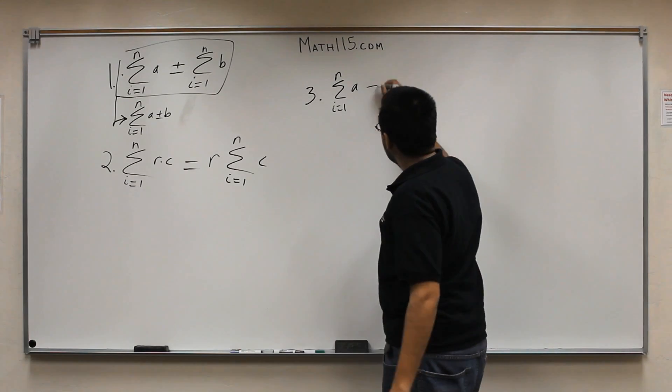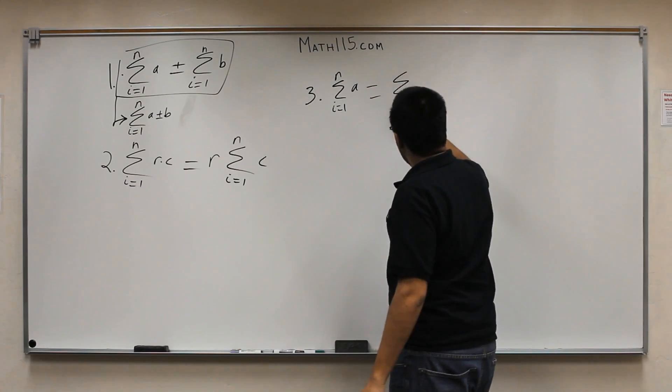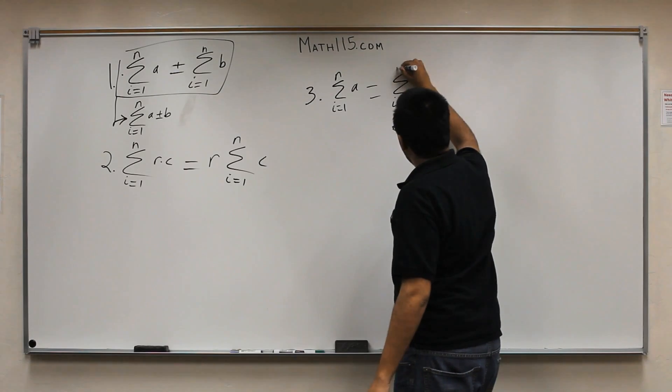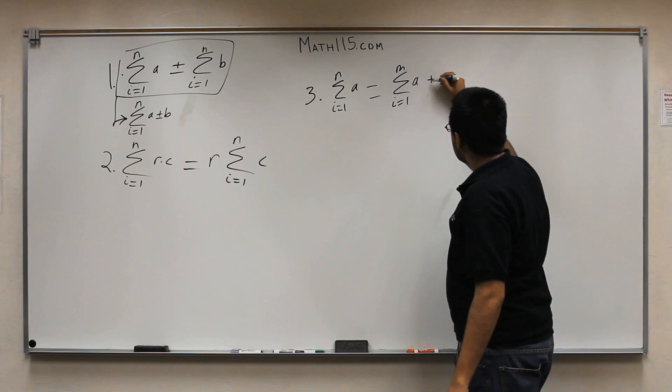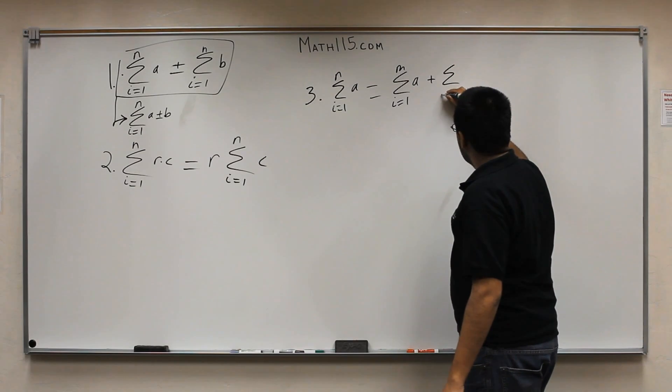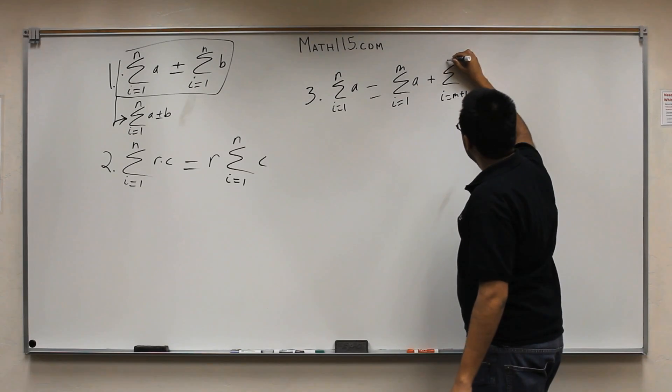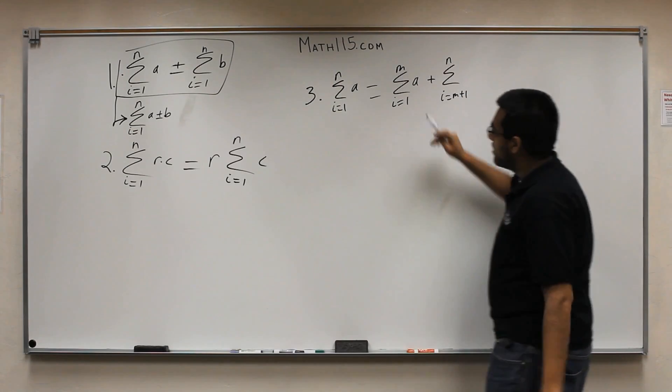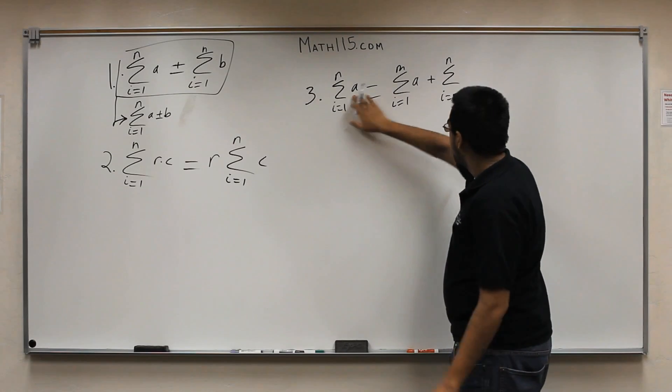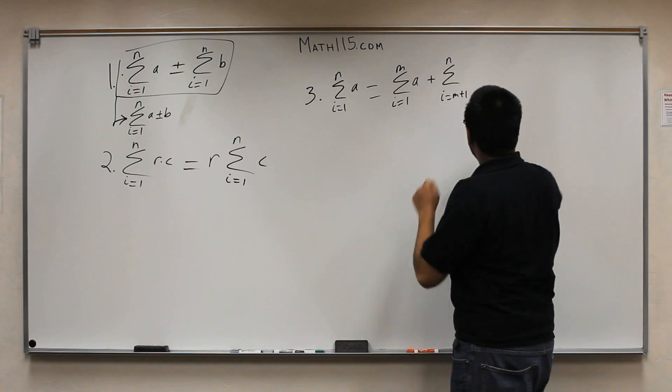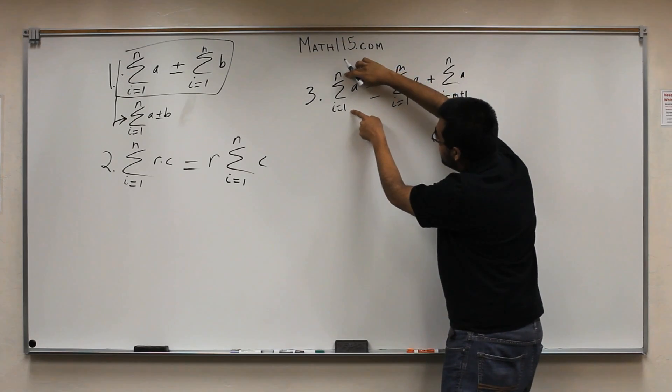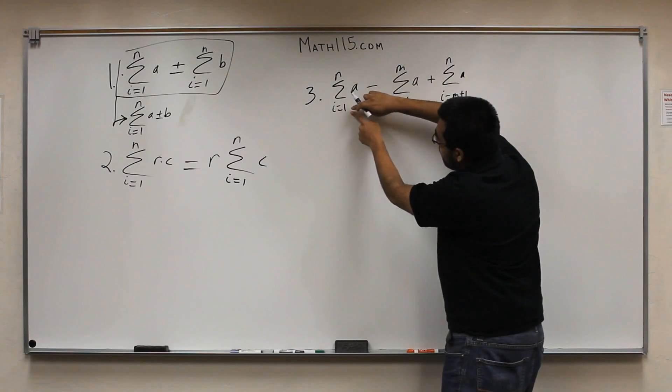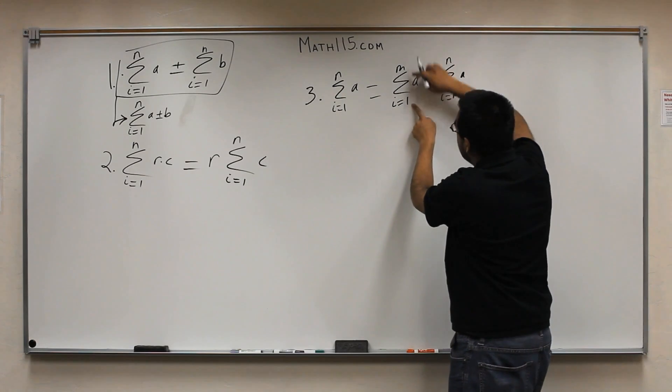Well, what you can do is you can make this equal to i equals 1 to m, notice this is m, not n, of a, plus i equals m plus 1 to n. So, what I did was I didn't mess with this at all. So, this stays here and then there'll be another a right here. But what I did was I messed with this right here, the indices.